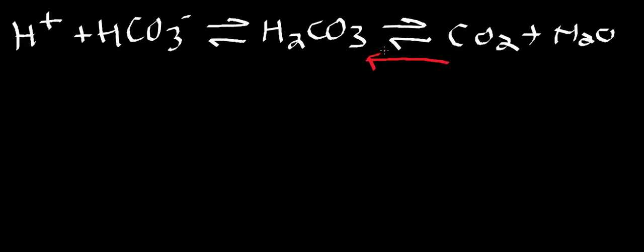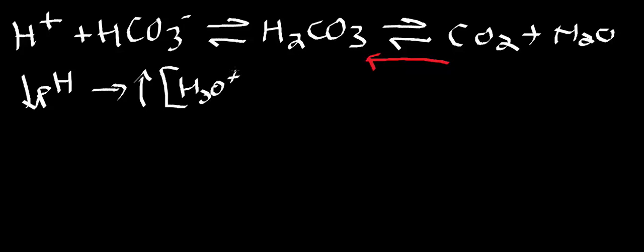We're going to run the reaction in the direction from CO2 to water. Recall that for this pathway, if I wanted to lower pH I'm going to have to raise the concentration of H3O+ — hydronium. So essentially we'll look at the mechanism of carbonic anhydrase to understand exactly how CO2 raises the proton concentration and therefore drops the pH.